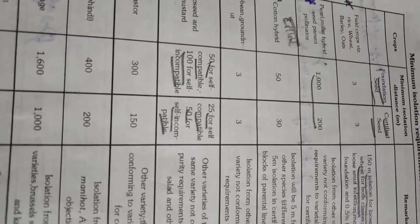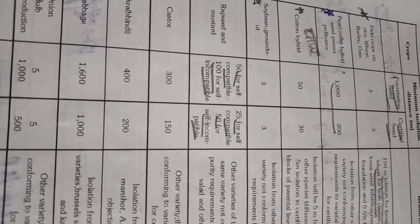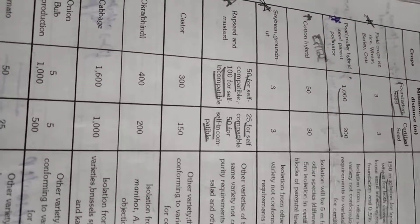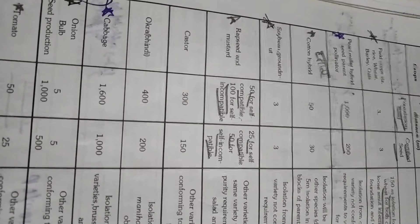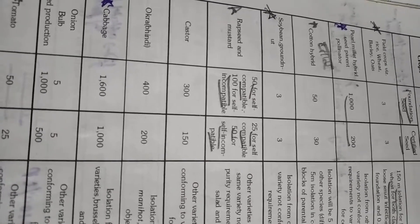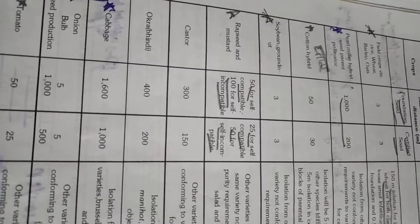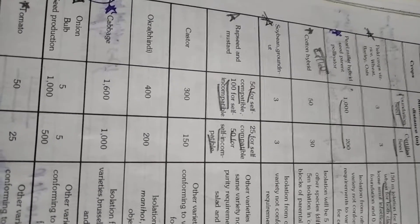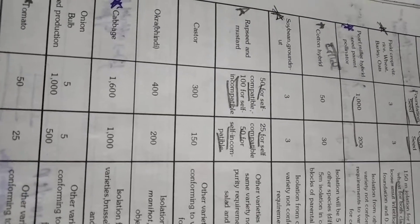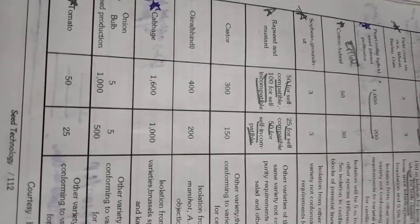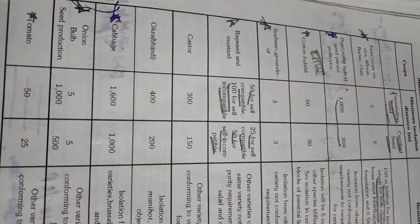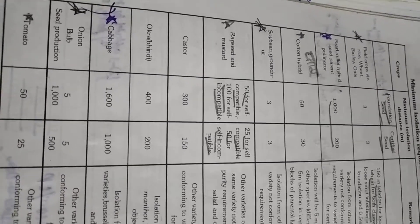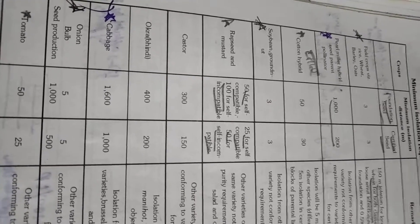And student please remember the isolation distance from some important field crops. Like wheat, barley, oat it is 3 meters. For pearl millet hybrid, for foundation seed it is 1000 m and for certified seed it is 200 m. Rapeseed mustard 50 for self-compatible and 100 for self-incompatible for foundation seed, and for certified seed 25 for self-compatible and 50 for self-incompatible. Do not go in that much detail. Only remember some basics. Like for tomato 50-25 it is very important and easy to remember.